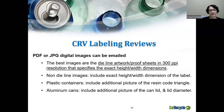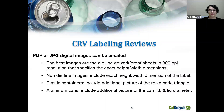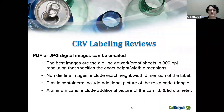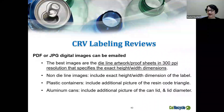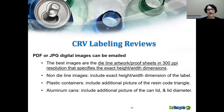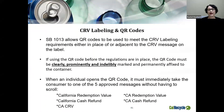For CRV labeling reviews, PDF or JPEG digital images can be emailed. The best images are die line artwork proof sheets at 300 PPI resolution that specify the exact height and width dimensions. Non-die-line images should include exact height and width dimensions of the label. For plastic containers, include an additional picture of the resin code triangle. For aluminum cans, include an additional picture of the can lid and lid diameter.